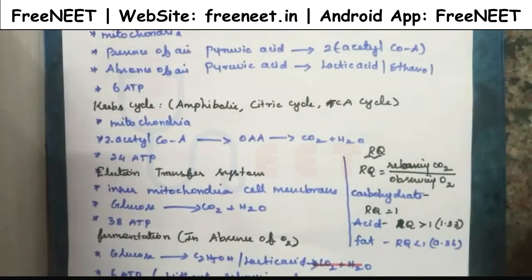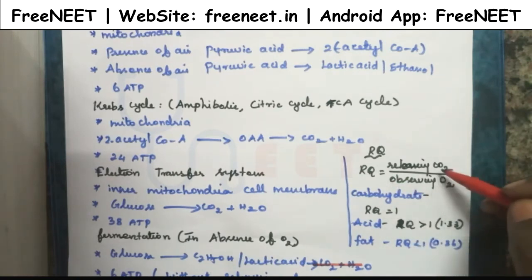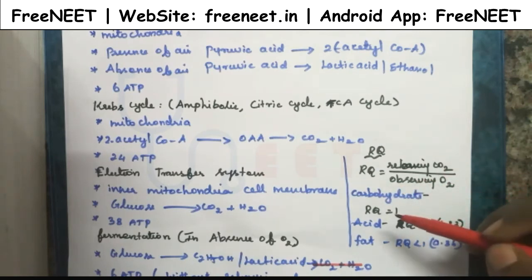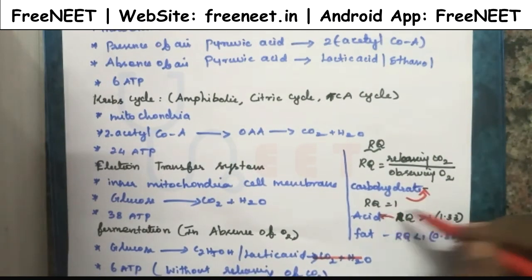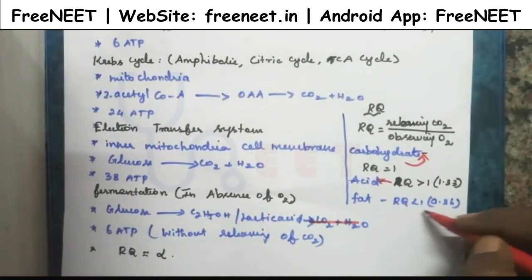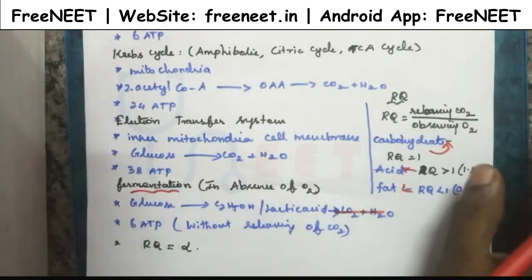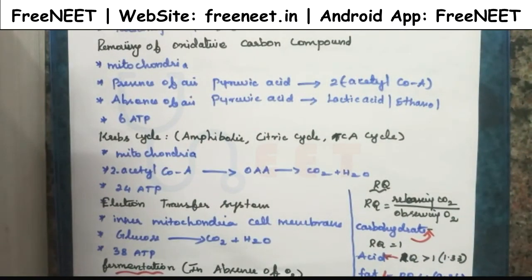Another important key point is RQ. RQ stands for respiratory quotient. Respiratory quotient is the ratio between the carbon dioxide released and the oxygen absorbed in any chemical reaction. If the RQ value is 1, the substrate is a carbohydrate. If the RQ value is greater than 1, the substrate is an organic acid. If the RQ value is less than 1, the substrate is a fat. The RQ value is infinity for the fermentation process.